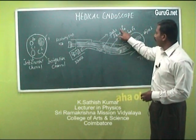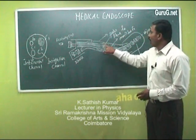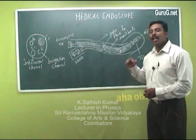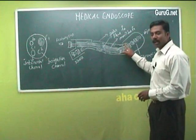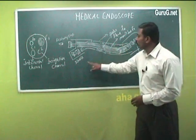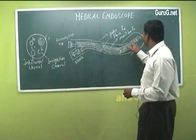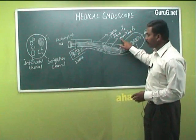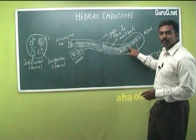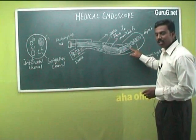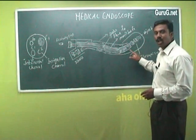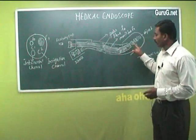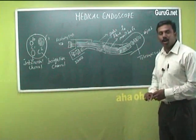The outer bundle F0 and the inner bundle F1. In the outer bundle, all the optical fibers are arranged in an irregular fashion, so it is an incoherent bundle, which is used to transmit the light source to the internal organs. The inner bundle F1 has all the optical fibers arranged in a regular fashion, so it is a coherent bundle, used to collect the reflected light from the internal organs.